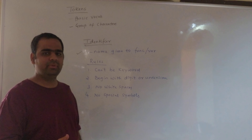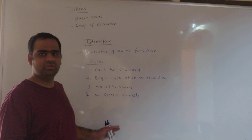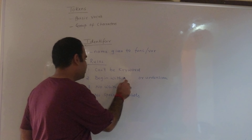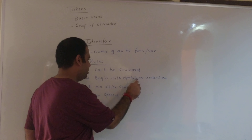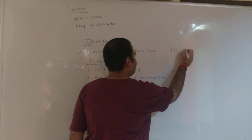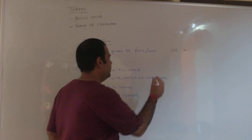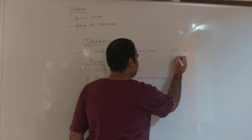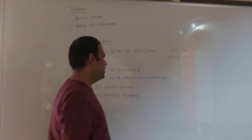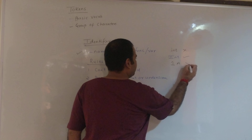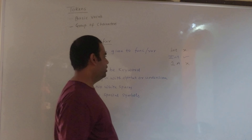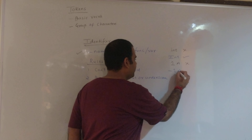Keywords cannot be used for some other purpose. Identifiers should not have any special symbols, should not have any white space characters, and should begin with an alphabet or underscore. For example, if we write 'int', it is an invalid identifier because int is a keyword. But if we write 'Int' with uppercase I, it is a valid identifier since keywords are written in lowercase. If we write '1a', it is an invalid identifier because it cannot begin with a digit — it should begin with an alphabet or underscore. If we write '_1a', it is a valid identifier.